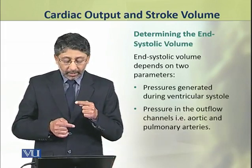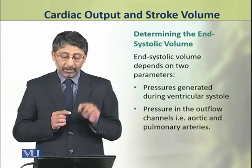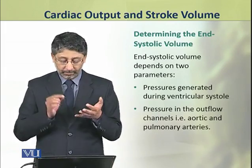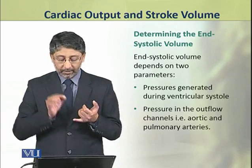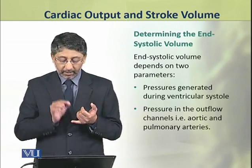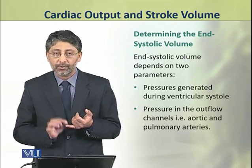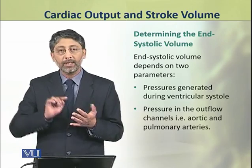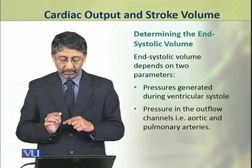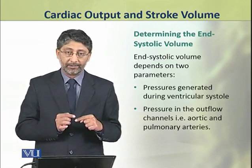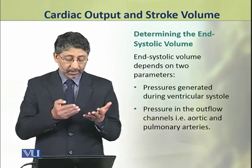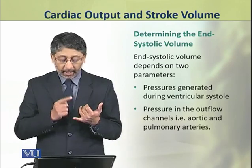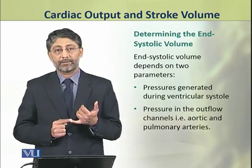The end systolic volume depends on two parameters. Number one, the pressures generated during ventricular systole and the pressure in the outflow channels — that is, the aortic and pulmonary arteries.